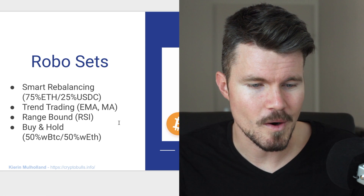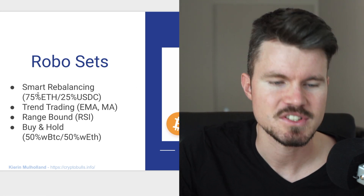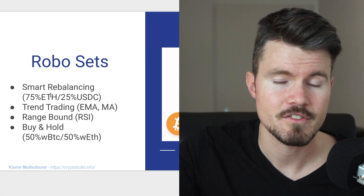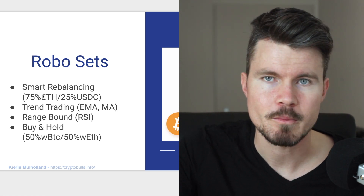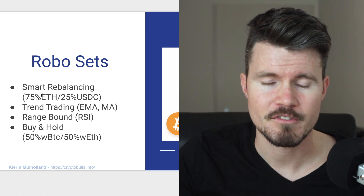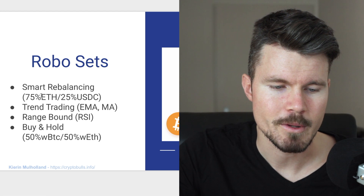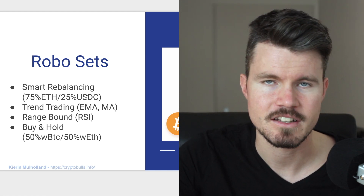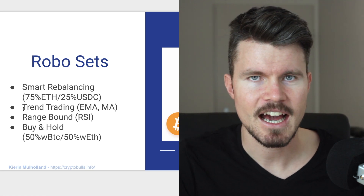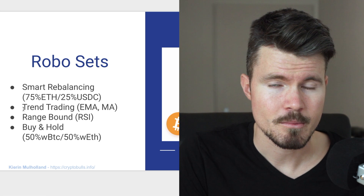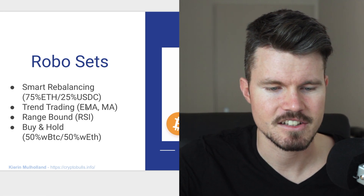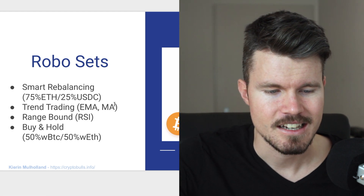Looking at robo sets first: with smart rebalancing you might have for example 75% ETH and 25% USDC in your set. Should the price of Ethereum rise, a little bit of Ethereum gets sold so the balance returns to 75%/25% USDC, and if Ethereum falls, more Ethereum gets bought with the available USDC stablecoin in that set. With trend trading you use exponential moving averages and moving averages — you can have Ethereum and a stablecoin, or BTC and a stablecoin — and it will buy and sell based on these indicators. We'll look at a moving average set example later in the video.